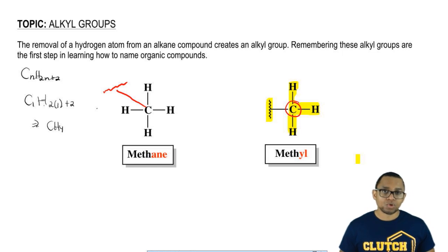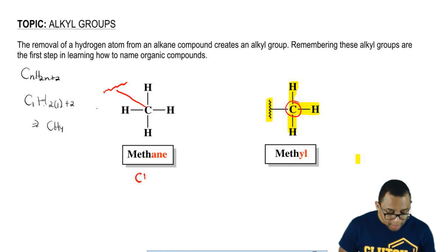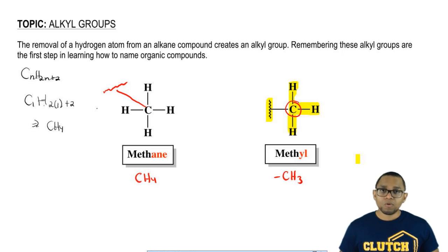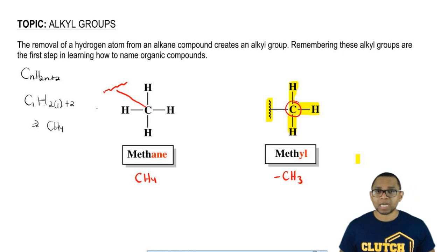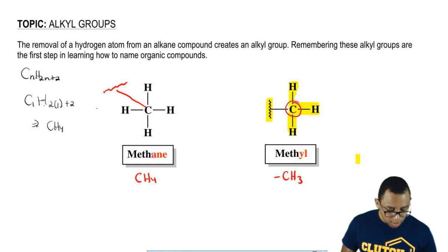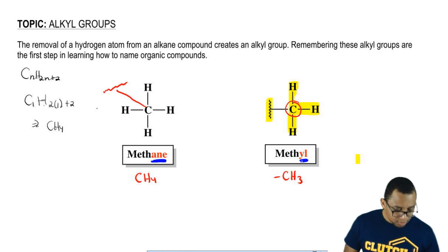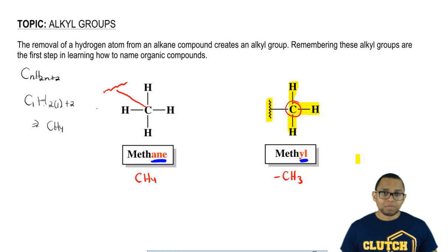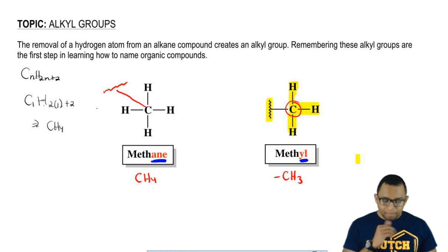Notice the difference between the two structures. We go from CH4, which is methane, to CH3, which is methyl. Another thing you should notice is that the end of the name changes when we become an alkyl group. If you take a hydrogen from an alkane, the ending changes to -yl. Going from -ane to -yl: methane is CH4, methyl is CH3.